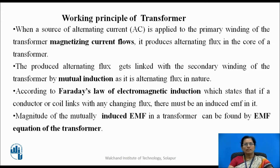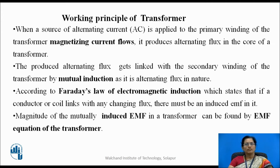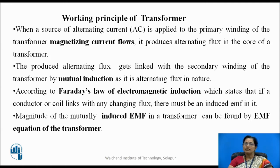When the source of alternating current is applied to the primary winding of the transformer, magnetizing current flows and it produces alternating flux in the core of transformer. The produced alternating flux gets linked with the secondary winding of the transformer by mutual induction, as it is alternating flux in nature.